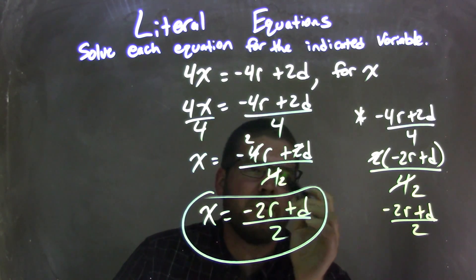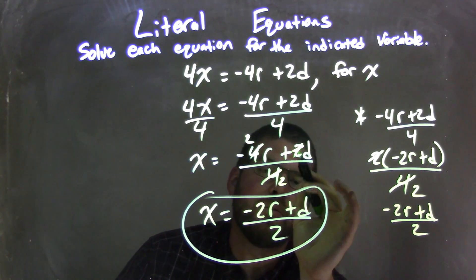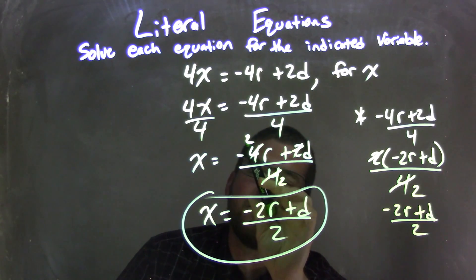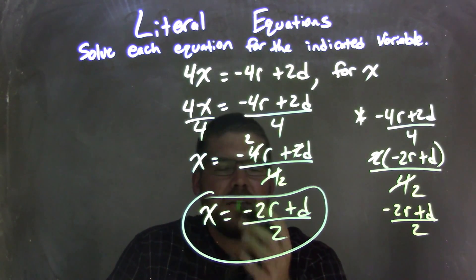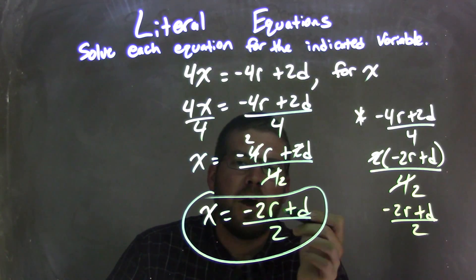I prefer, once you're comfortable, to do a quick thing just to make sure that 2 goes dividing all parts by 2. 4 divided by 2 is 2, 2 divided by 2 is 1 and eliminates it, 4 divided by 2 is 2. Fantastic. So it leaves me with my final answer here, that x equals negative 2r plus d all over 2.